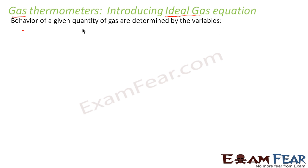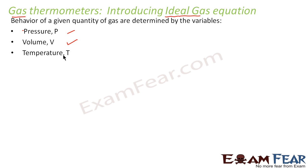For any gas, the behavior of a given quantity of gas is determined by a set of variables: pressure, volume, and temperature. If we know the pressure, volume, and temperature of any gas, we can predict the behavior of that gas. These three variables determine the behavior of a gas.